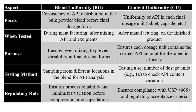Blend uniformity is tested during manufacturing after mixing the API and the excipients. Content uniformity is tested after the manufacturing of finished formulations, and is sometimes also checked during in-process testing during compression and capsule filling. The purpose of blend uniformity is to ensure even mixing to prevent variability in the final dosage form, while the purpose of content uniformity is to ensure each dosage unit contains the correct API amount for therapeutic efficacy and to avoid any side effects.